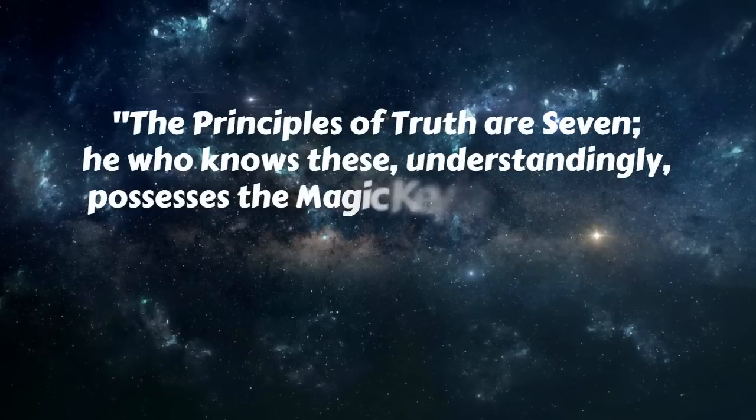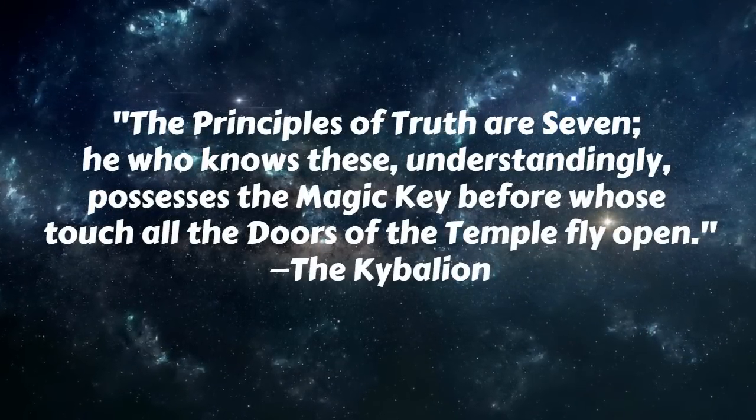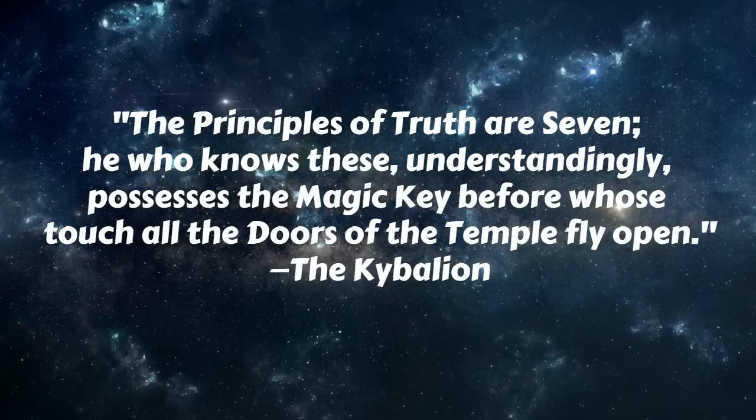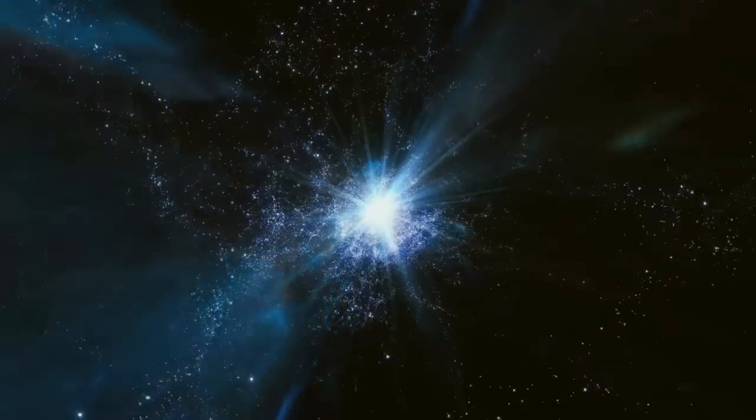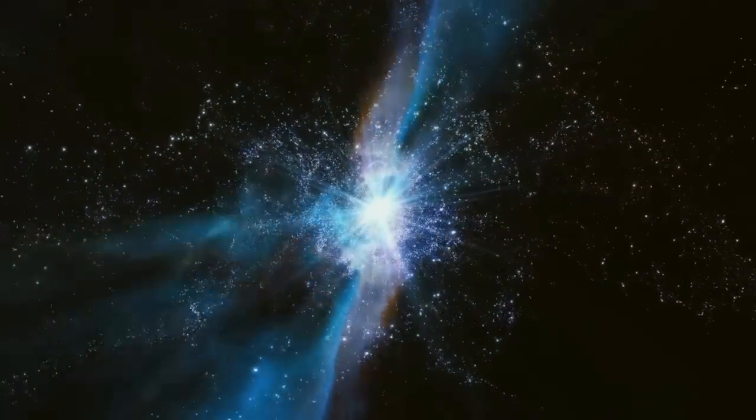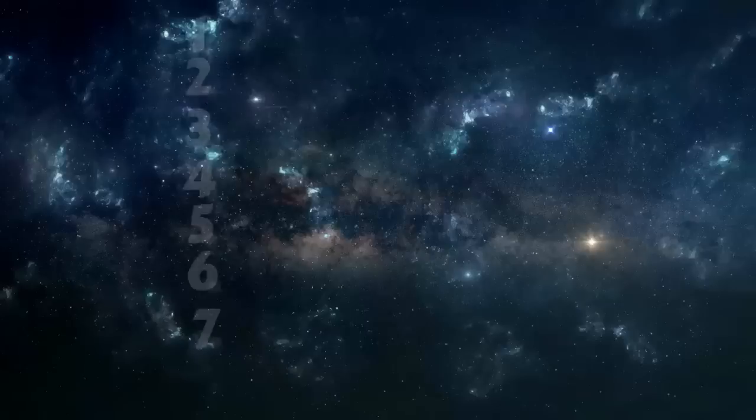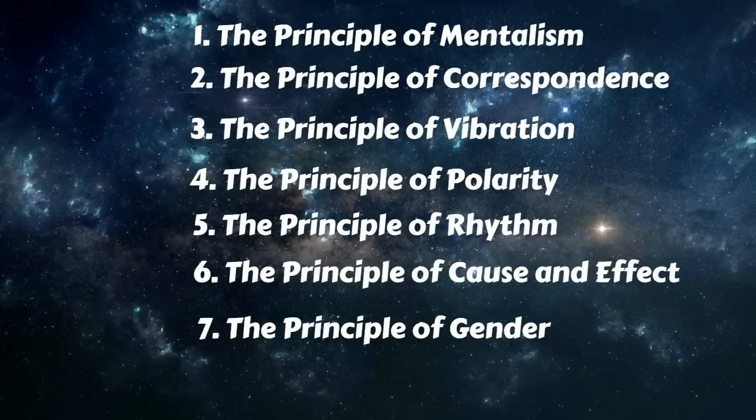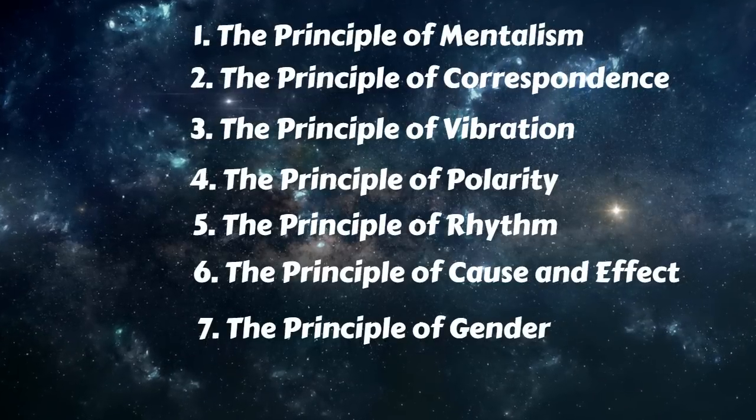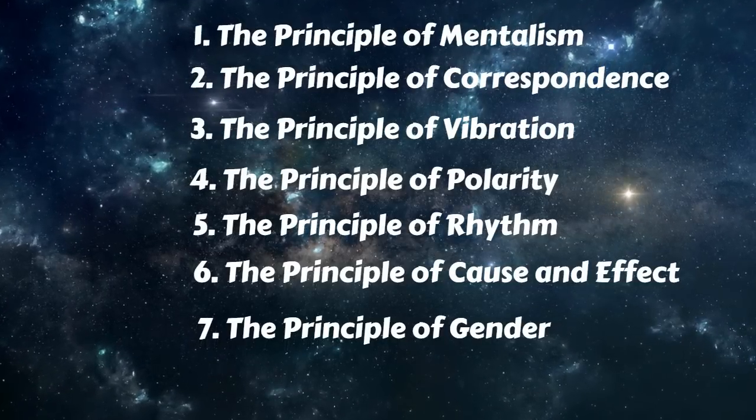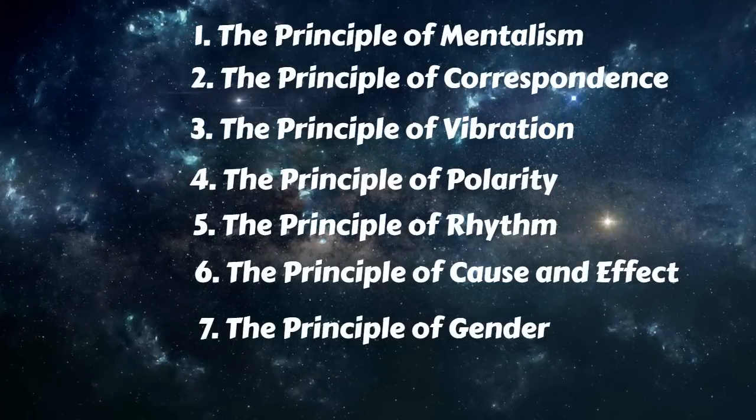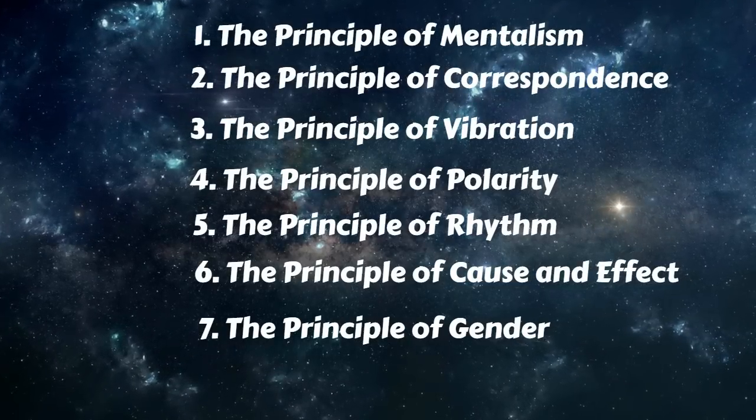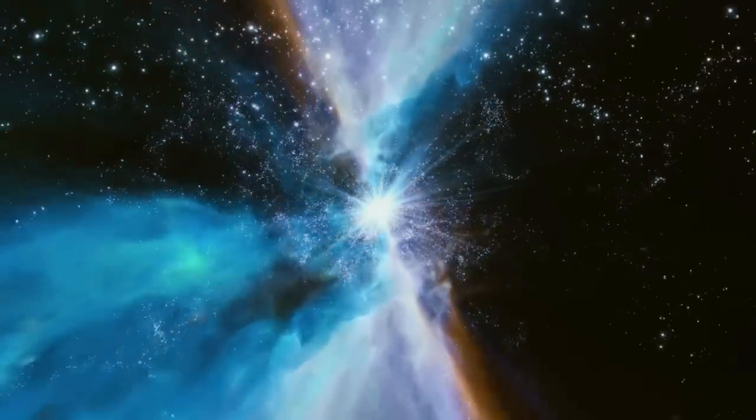The principles of truth are seven, he who knows these, understandingly, possesses the magic key, before whose touch, all the doors of the temple fly open. The seven Hermetic Principles, upon which the entire Hermetic philosophy is based, are as follows: The Principle of Mentalism, The Principle of Correspondence, The Principle of Vibration, The Principle of Polarity, The Principle of Rhythm, The Principle of Cause and Effect, and The Principle of Gender.